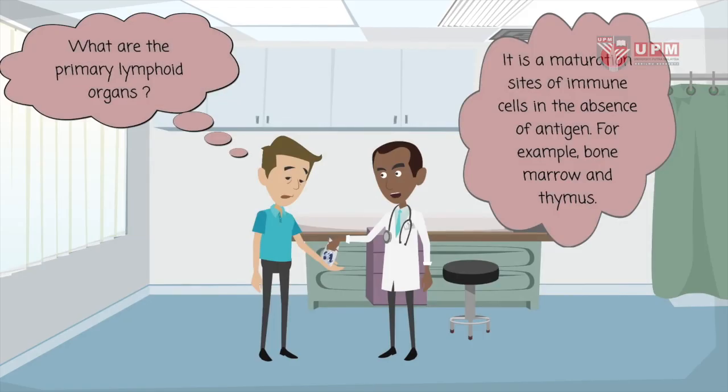What are the primary lymphoid organs? They are a maturation site of immune cells in the absence of antigen. Examples include bone marrow and thymus.